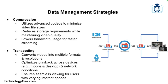Efficient data management is crucial for handling the vast amounts of content on YouTube. The first strategy is compression — video files are compressed using advanced codecs to reduce their size without compromising quality, helping save storage space and reduce bandwidth requirements. Videos are also transcoded into multiple formats and resolutions to cater to different devices and network conditions, ensuring users can watch videos seamlessly whether on a high-speed connection or a mobile device with limited bandwidth.